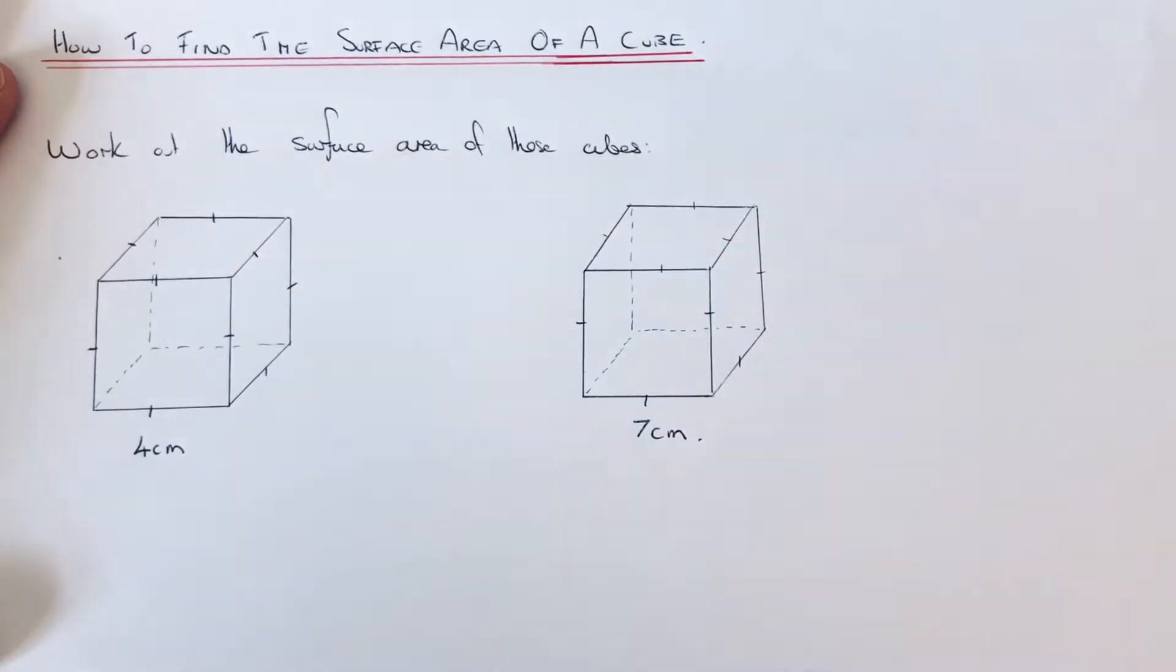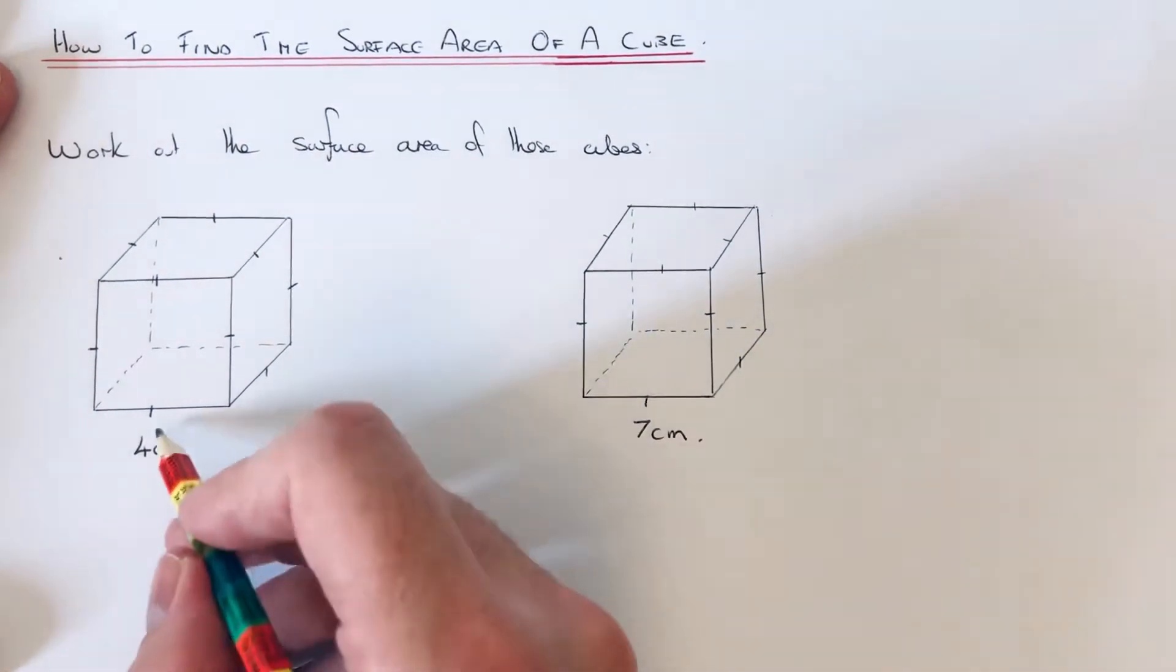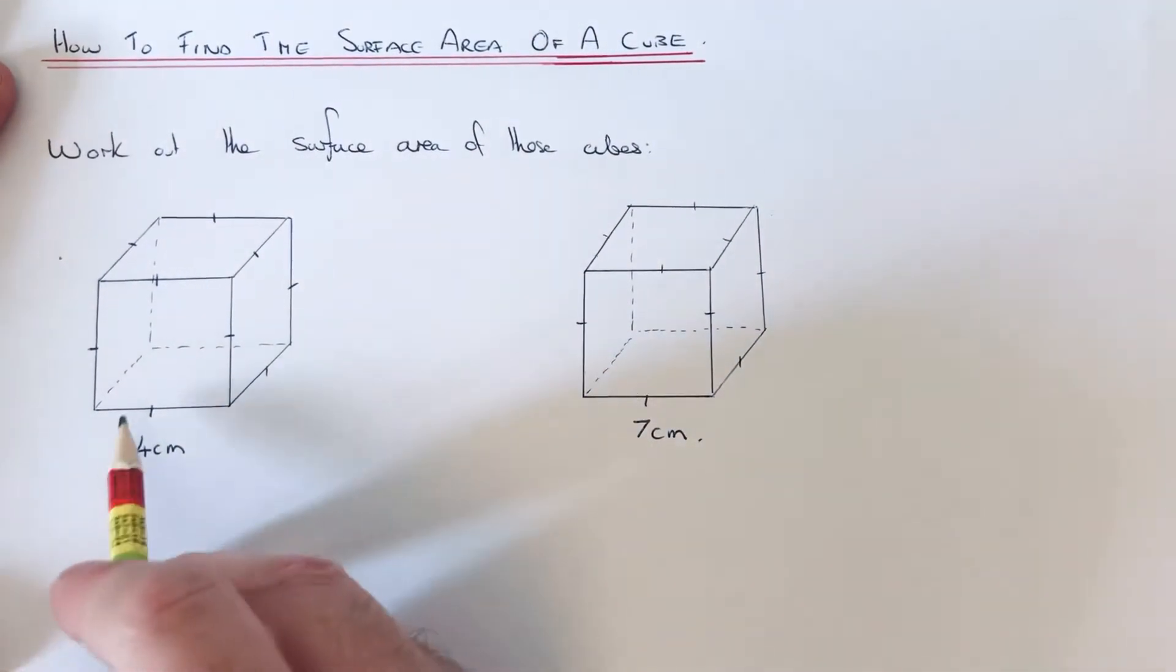So all we need to do is work out the area of one of the squares and then times the answer by six, because all the faces have the same area. On our first example, we've got a cube of side length 4 centimeters.